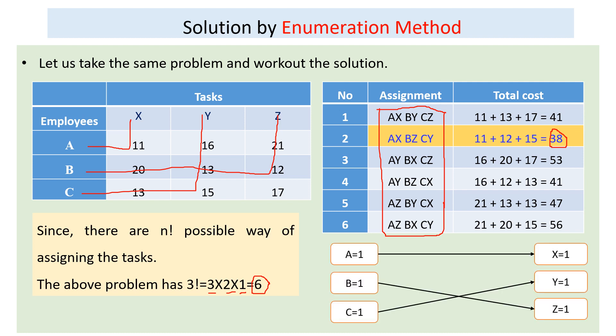We can graphically represent it like this: A is assigned to X, B is assigned to Z, and C is assigned to Y. As you can see, there is no other assignment which requires less than this amount.